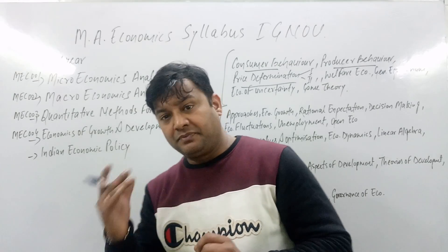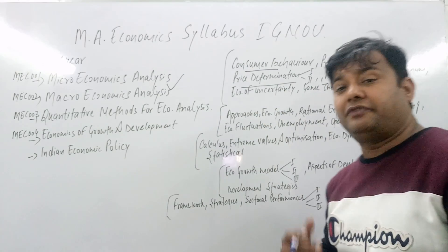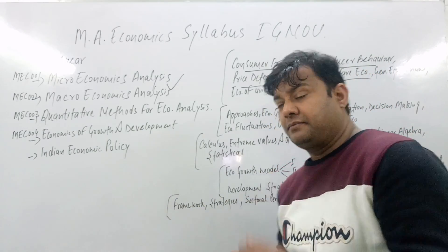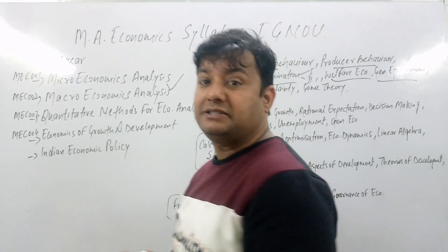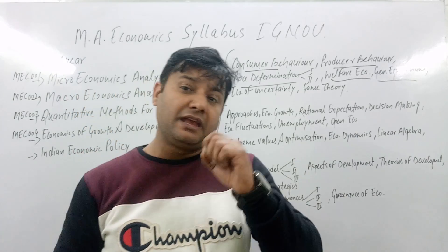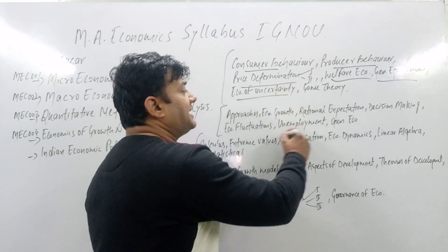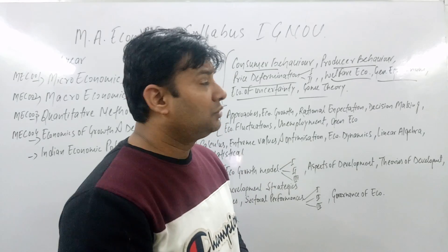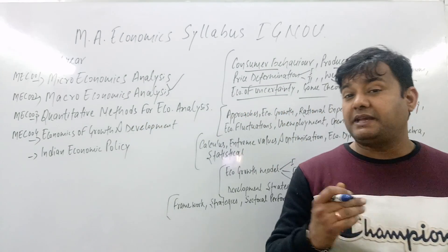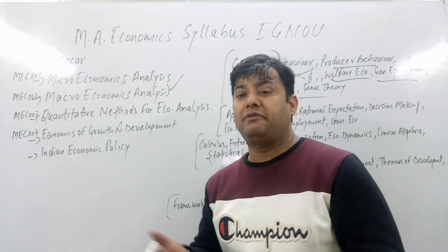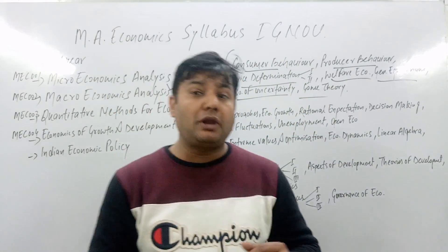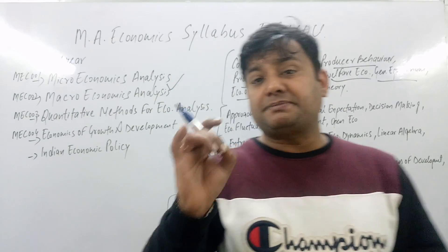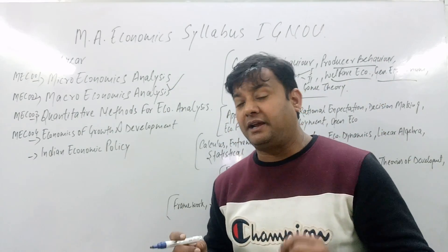The next part is Welfare Economics — what is welfare economics and how it is important for master's students. Then we jump to General Equilibrium — what is general equilibrium. After that, Economics of Uncertainty, and the last and most important expected topic for this first paper is Game Theory. So across the eight blocks of this paper, the topics go from consumer behavior, producer behavior, price determination, uncertainty, and ending with game theory.